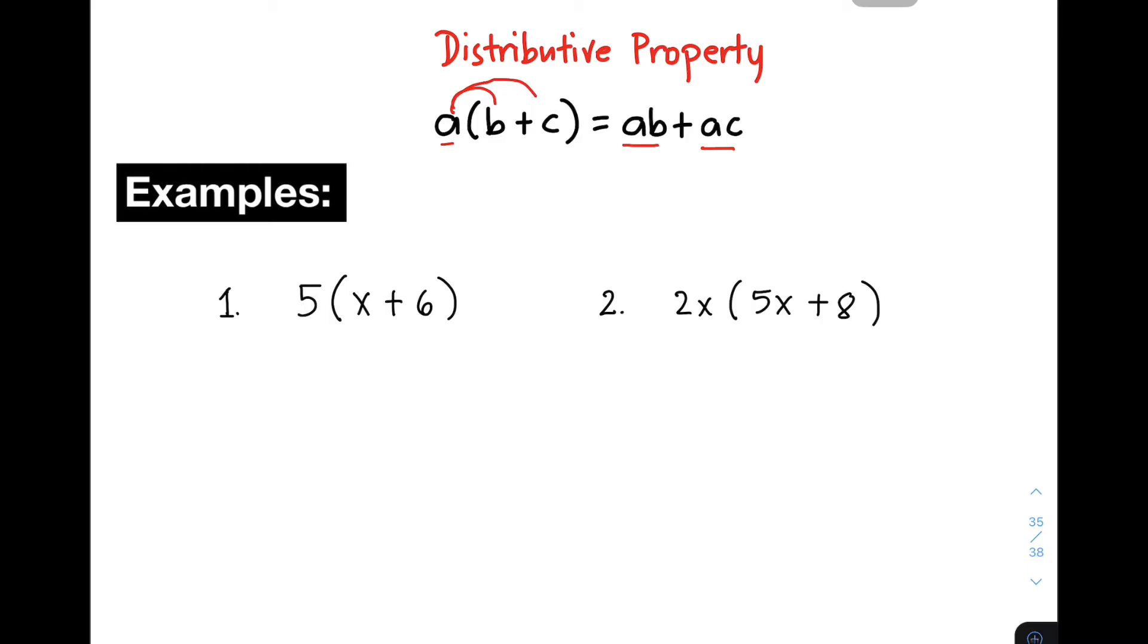The first example is that we have 5 times X plus 6. As you can see, this one is a monomial and the other is a binomial. So for you to be able to do this kind of topic, you need to apply laws of exponents and your knowledge about the operations on integers. So the first thing you need to do is to multiply 5 to X and 5 times X, it will give you 5X. Now for the second thing you need to do, you need to multiply again 5 to the other term of your binomial, which is 6. So 5 times 6, basically it will give you positive 30 or plus 30. This is the answer for example number 1.